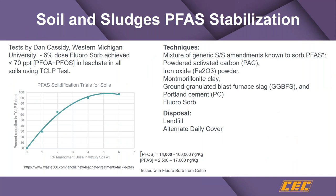We've been working with Dan Cassidy at the University of Western Michigan on the stabilization of some materials. In the Fluorosorb PFAS removal process, when the liquid-flow media gets completely used up, you have to do something with it. We've been looking at solidification with between 2 and 6 percent weight-by-weight of a cementitious product to get down below TCLP constituent levels, targeting 70 parts per trillion as a level for PFOA and PFOS in the expended Fluorosorb modified bentonite. This has great ability to be solidified to prevent leaching of PFAS constituents.